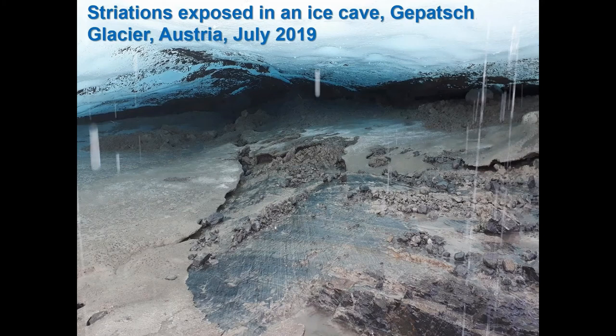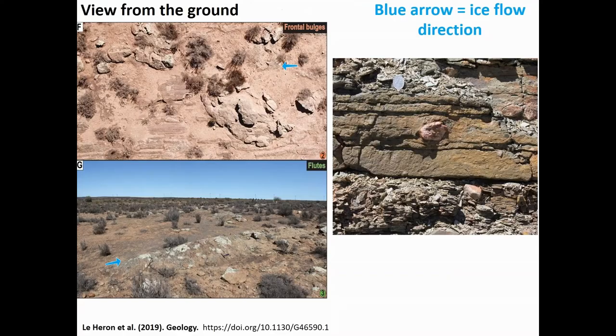For comparison, at the Gepatsch glacier in Austria I went into an ice cave a few months ago and saw striations forming — going into and out of the slide with ice coming towards you, scratched on hard metamorphic bedrock. The things I've been showing from South Africa form in soft sediment — a very different set of structures — and because they form in soft sediment they provide an archive of change in the ice sheets in a way that hard-bedrock striations don't.